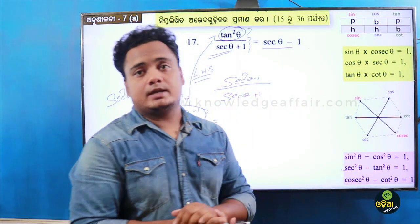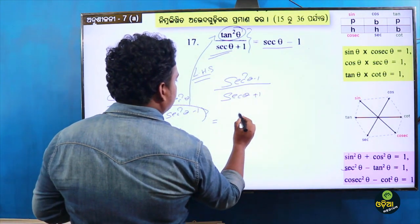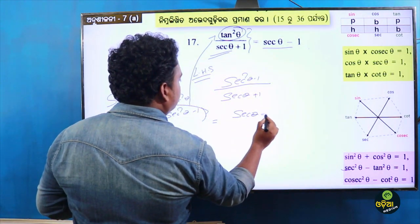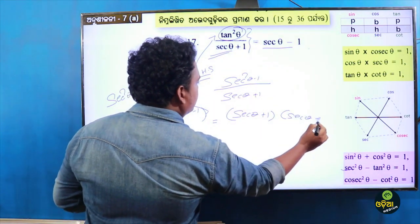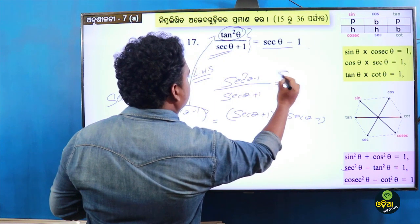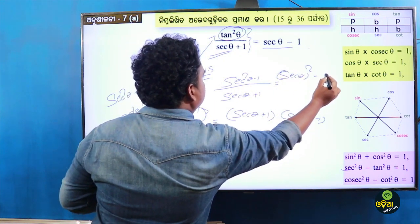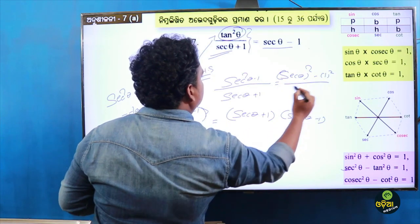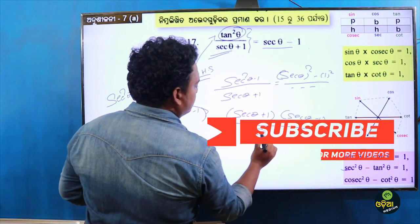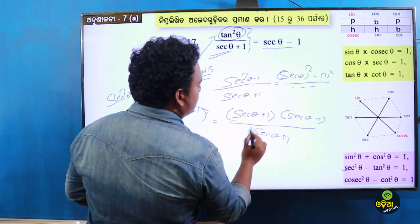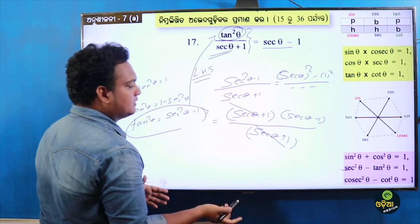We apply the identity a squared minus b squared equals a minus b times a plus b. So sec squared theta minus 1 equals sec theta minus 1 times sec theta plus 1, divided by sec theta plus 1. The sec theta plus 1 cancels, giving us sec theta minus 1.